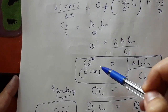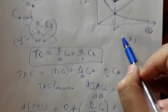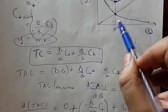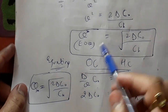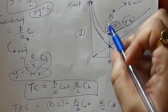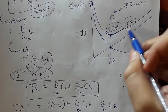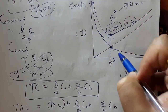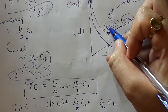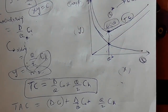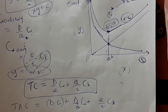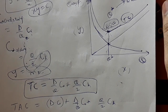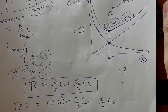Whether you differentiate the total cost and find the minima, or equate the ordering and holding cost curves and find their intersection — both methods give the same Q* = √(2D·C₀/CH). This means the minima of the total cost curve and the intersection of the two individual cost curves lie on the same vertical line, i.e., both occur at the EOQ.